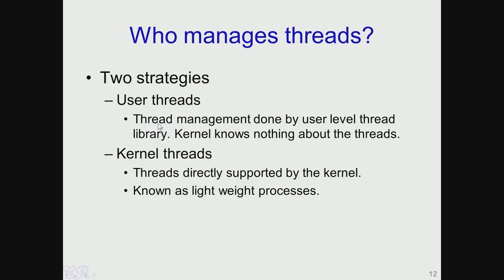Now that we have seen how threads are created and how they can be used to solve large jobs by parallelization, we will look at how threads are managed in systems. Threads are executing contexts, so we need entities that manage thread resources, decide which thread executes on the CPU, and so on. The two strategies available are user threads and kernel threads. User threads are managed by a user-level thread library, where the kernel knows nothing about the running threads. Kernel threads are directly supported by the kernel and are sometimes known as lightweight processes.